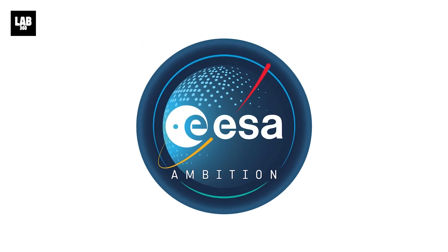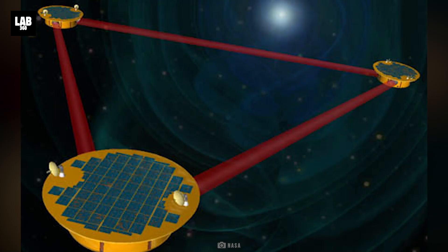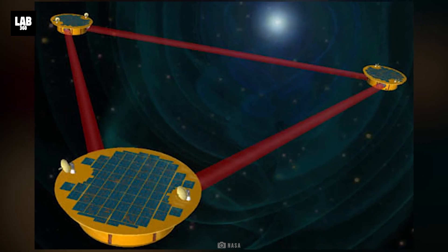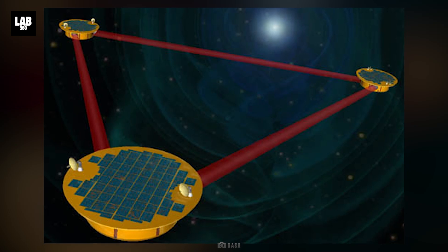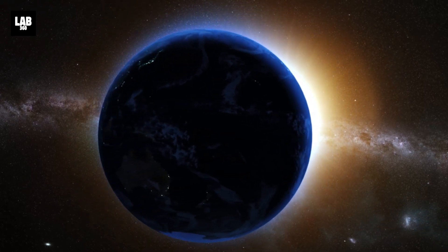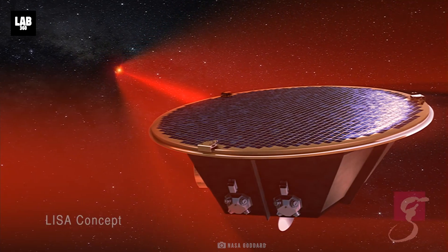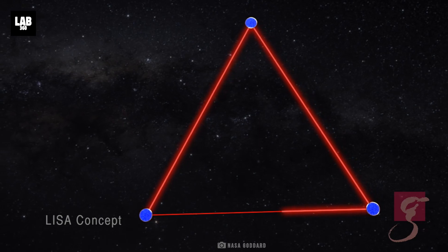Hence, the European Space Agency is planning to launch a space-based gravitational wave detector called LISA, the Laser Interferometer Space Antenna, to detect such mergers. It will orbit the Sun along with the Earth. As of now, its launch is scheduled in 2037.